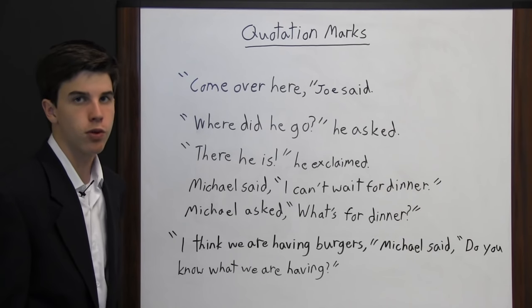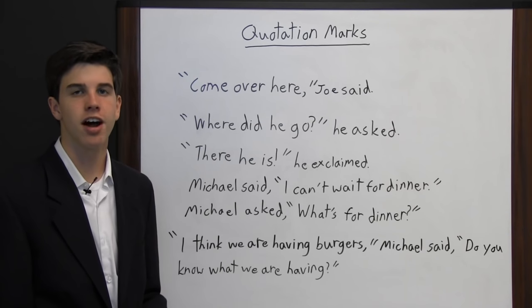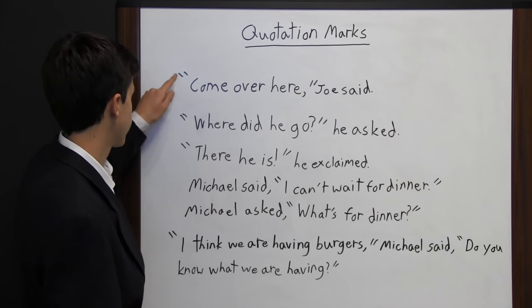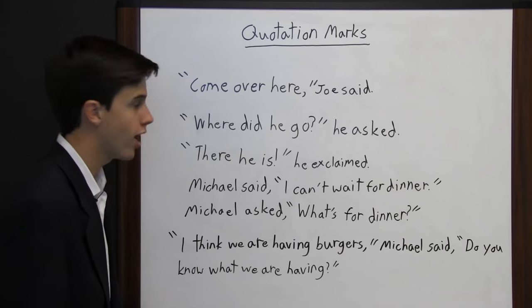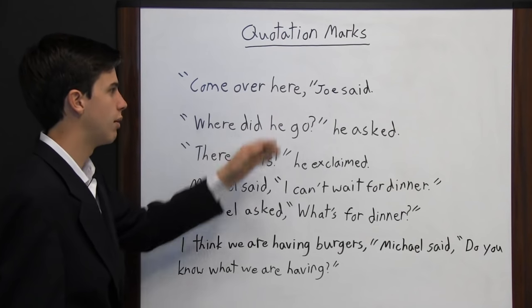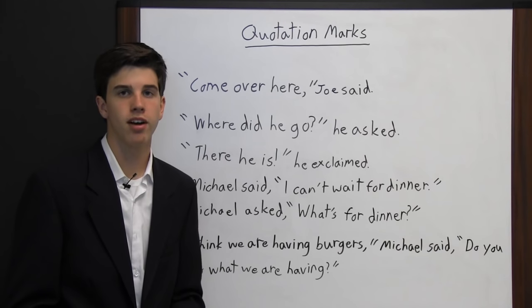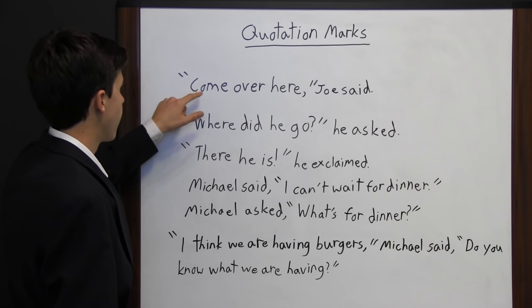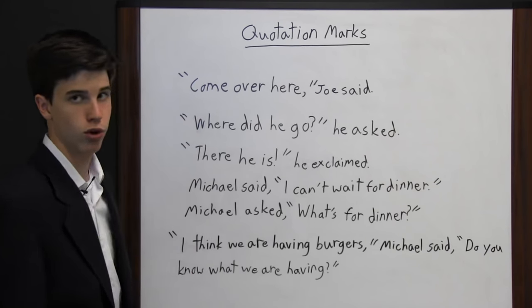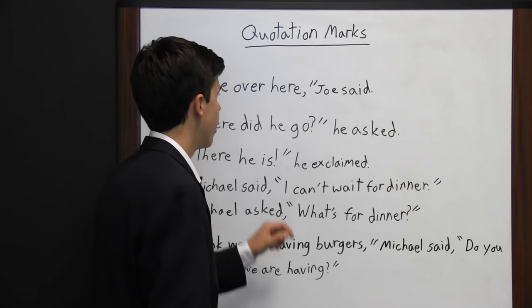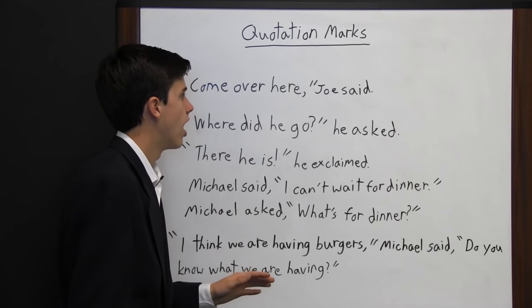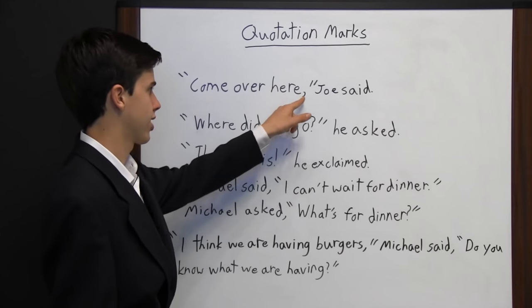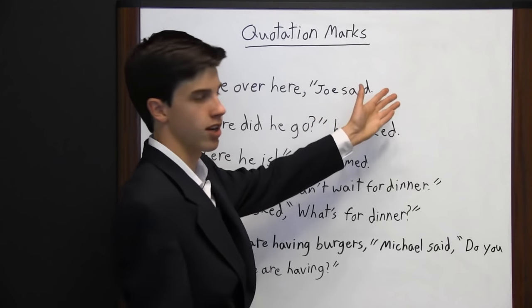Quotation marks are used to show that the words inside them are someone else's — not the writer's own. For example: 'Come over here,' Joe said. The quotation marks show that Joe said 'come over here,' not the writer. Notice: you open the sentence with quotation marks, capitalize the first letter of the first word inside, and if the sentence inside is declarative or imperative — one that would end with a period on its own — you end it with a comma inside the quotation marks before continuing the sentence.